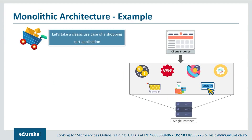Let's understand more about monolithic architecture by using a shopping cart application for reference. As a user, when you open a shopping cart application, you see different features for handling wish lists, new labels, new brands in the markets, customer services and so on. But if the developers decided to build this application on a single framework, then all the features were put together on a single database. This not only created problems for scalability, but also for fault tolerance and agility.